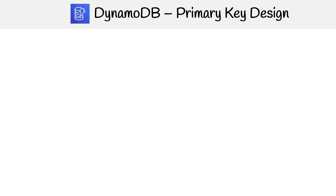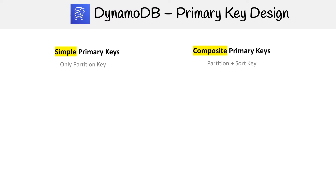Let's talk about primary key designs. We're going to be talking about simple keys and the composite key. A simple key is only a partition key, and a composite key is made up of both a partition and sort key.